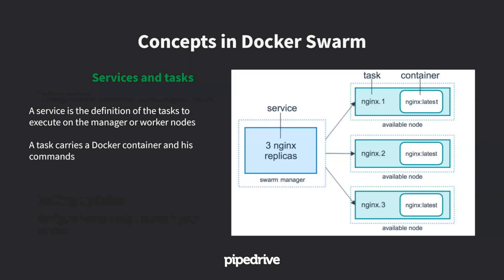We also have services and tasks. A service is what you provide to your customer — your microservice, for example. The task is the entity that controls the container and tracks what happens in it. Normally a service represents the whole thing, and tasks are the replicas. One difference from Kubernetes: in Swarm a task only allows one container, whereas Kubernetes pods — the rough equivalent — support multiple containers.